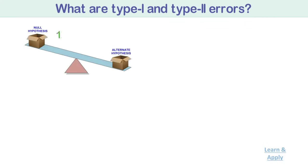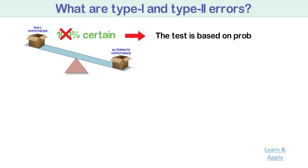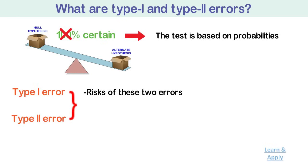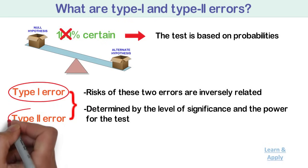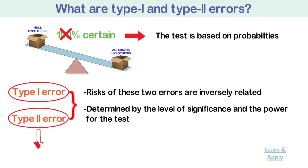What are type 1 and type 2 errors? No hypothesis test is 100% certain. Because the test is based on probabilities, there is always a chance of making an incorrect conclusion. When you conduct a hypothesis test, two types of errors are possible: type 1 and type 2. The risk of these two errors are inversely related and determined by the level of significance and power of the test. Therefore, you should determine which error has more severe consequences for your situation before you define the risk.